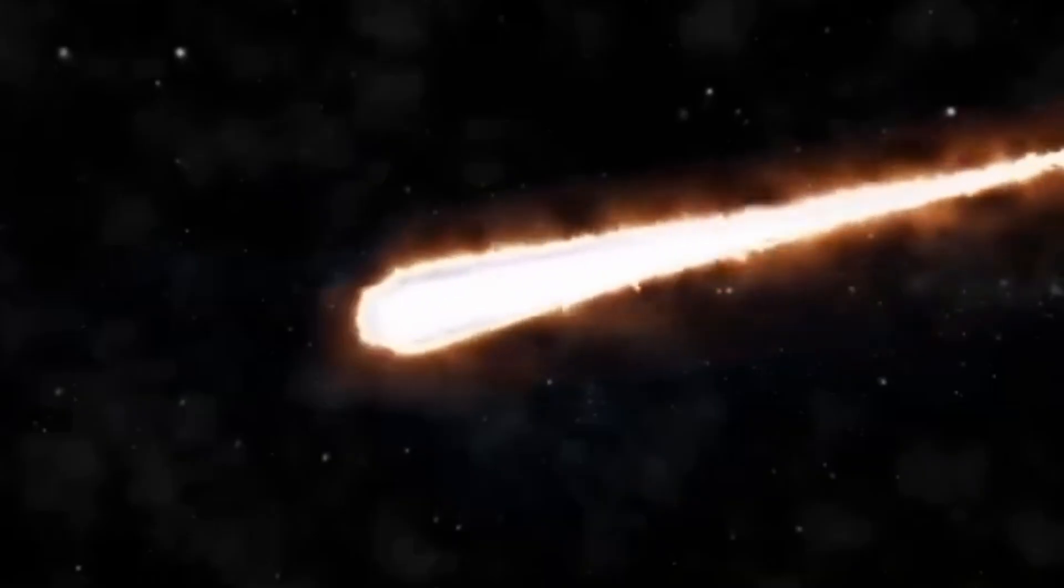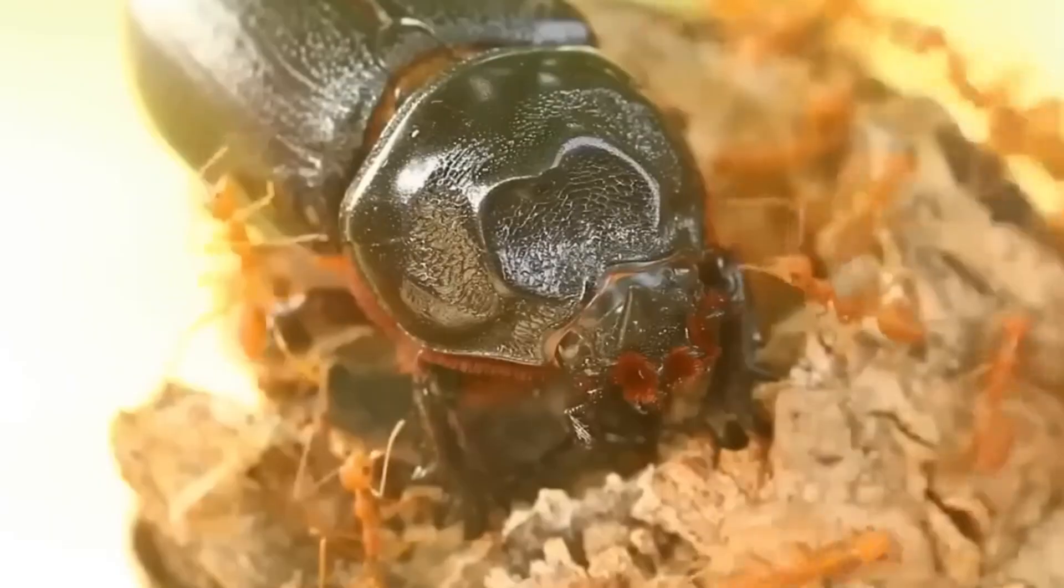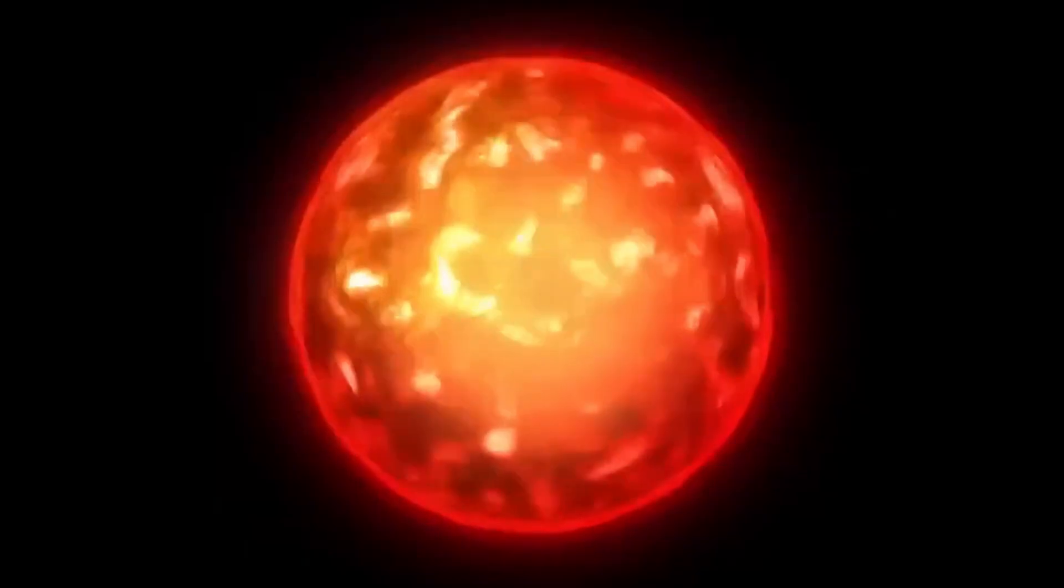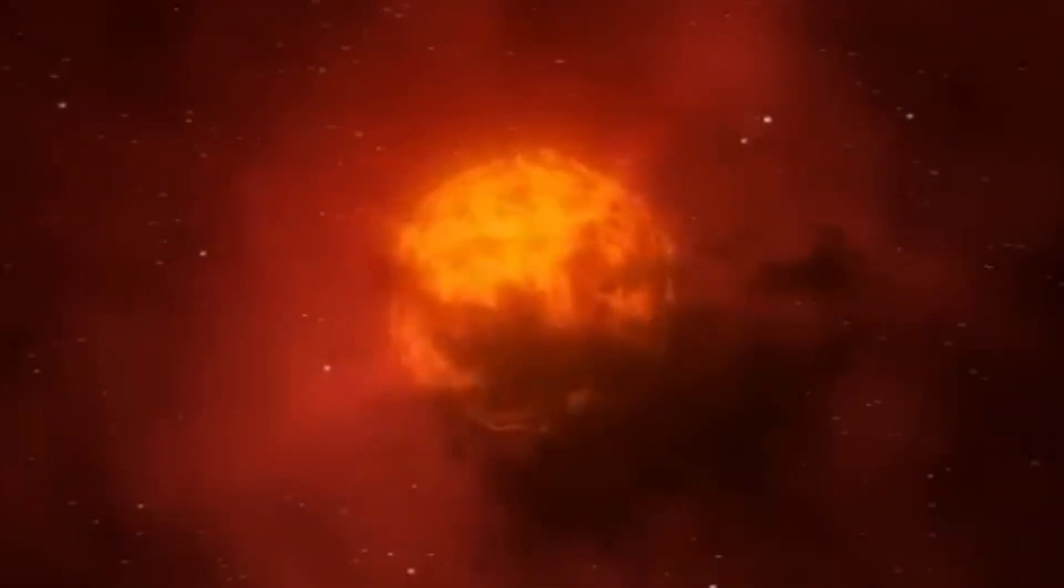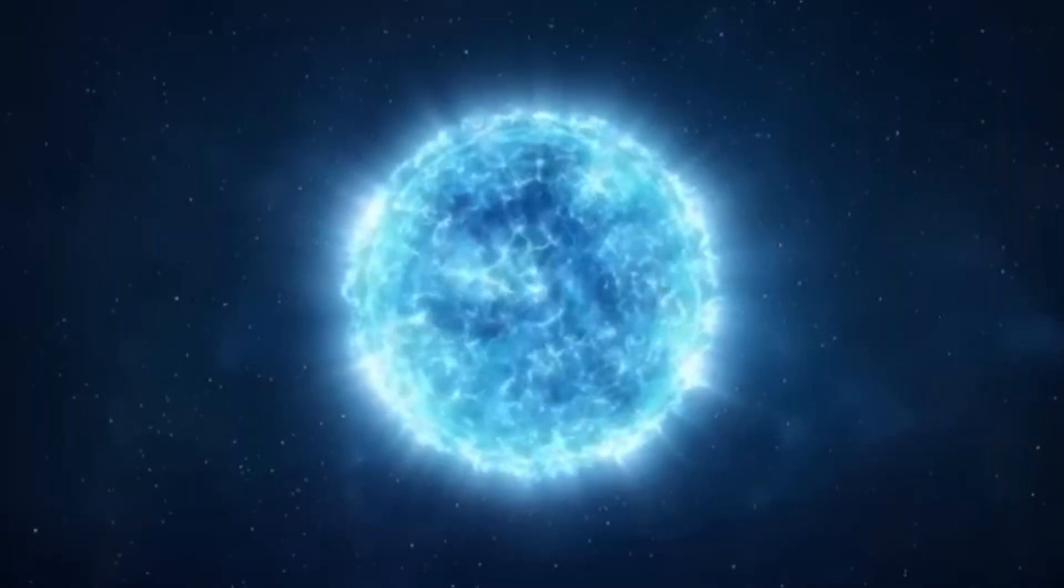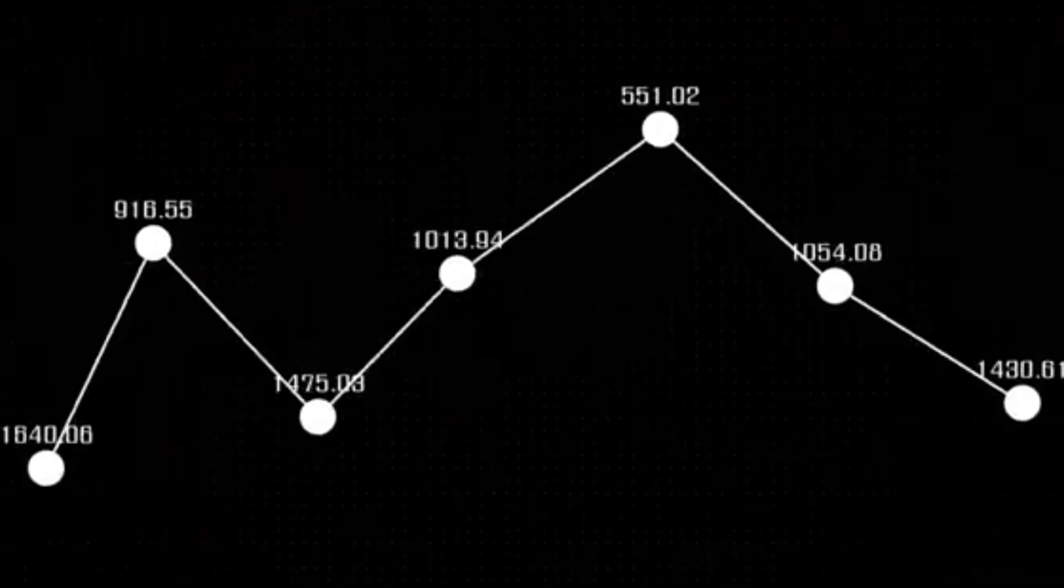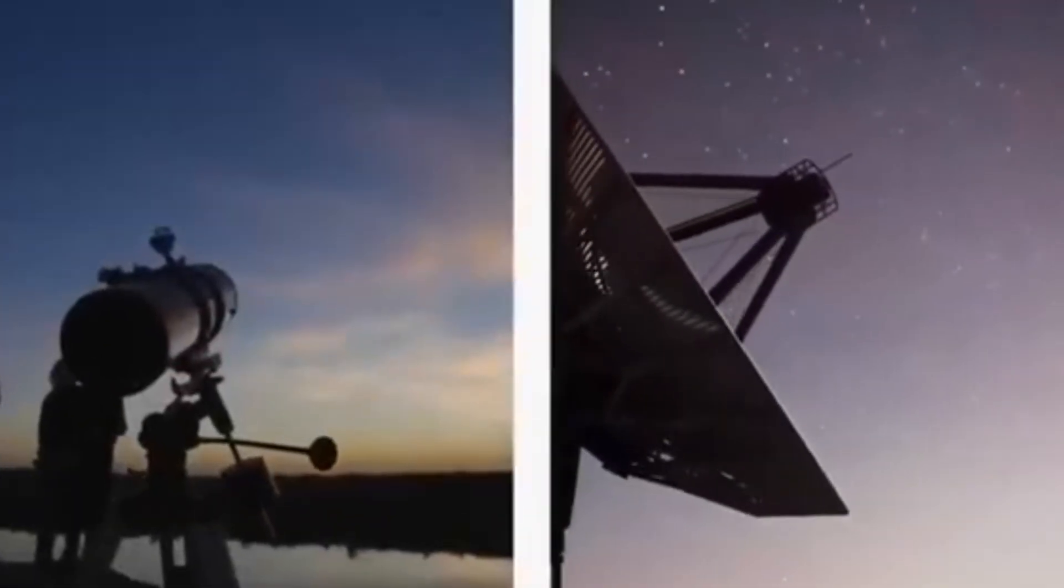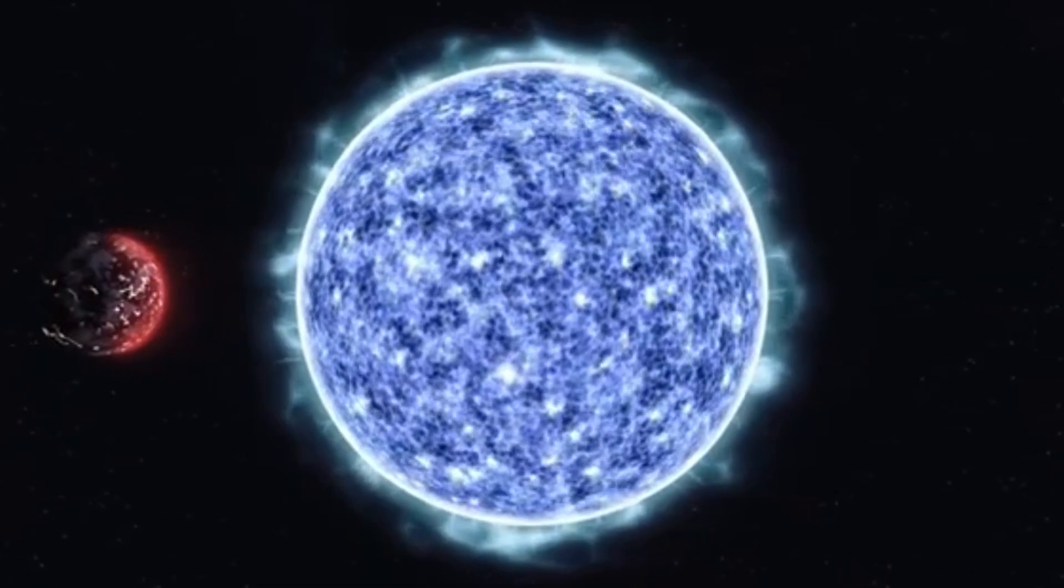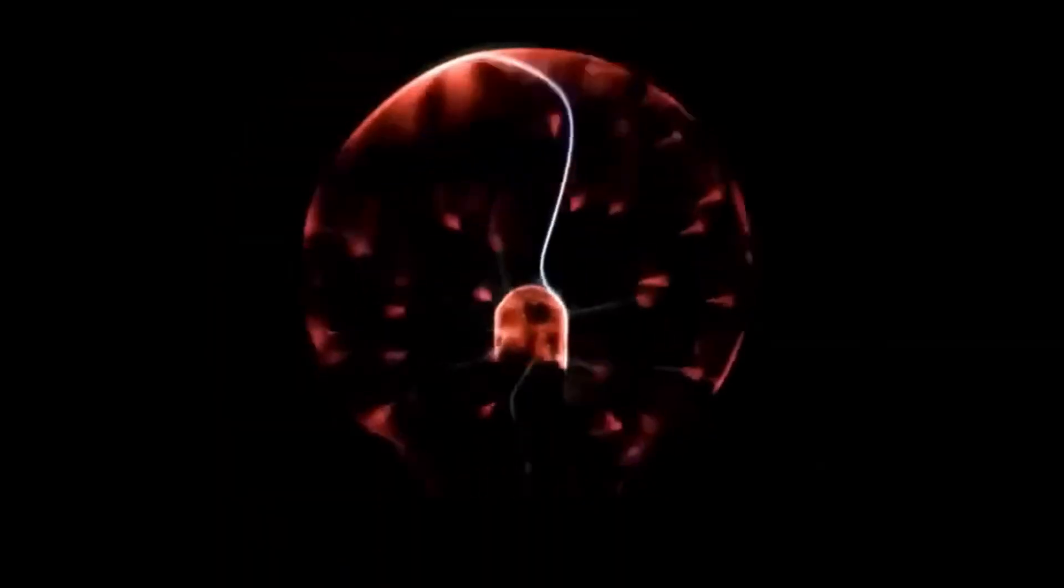But wait, there's more to this story that makes it even more fascinating. The explosion of Betelgeuse would also affect Earth in ways that we're only just beginning to understand. When a star explodes, it doesn't just produce light. It also shoots out high-energy particles called cosmic rays and releases intense radiation. Now, before you start worrying, let me reassure you that Betelgeuse is far enough away that this explosion won't hurt us. We won't get radiation poisoning or anything dangerous like that.